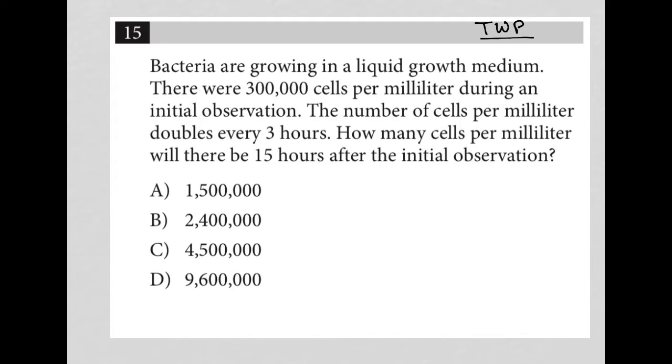The first sentence here says bacteria are growing in a liquid growth medium. Nothing quantitative to write there. It's just understanding what's happening. Sentence two, there were 300,000 cells per milliliter during an initial observation. So, I'm going to say initial is 300,000 per mL.